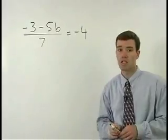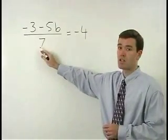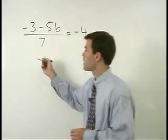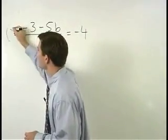So in the problem you see here, since the denominator of our fraction is 7, we get rid of the fraction by multiplying both sides of the equation by 7.